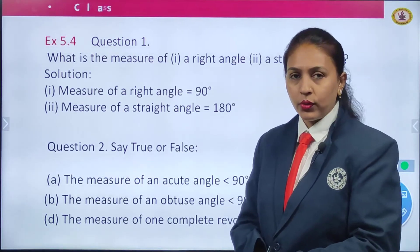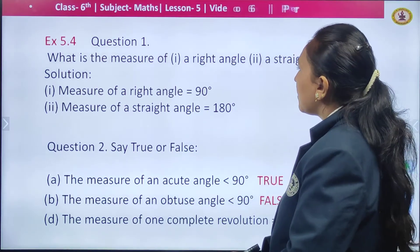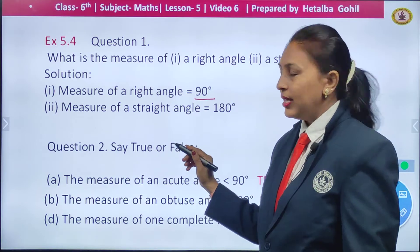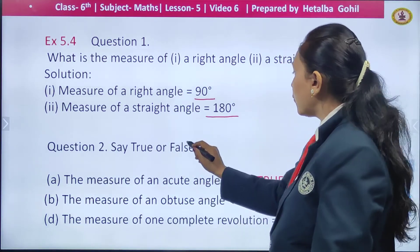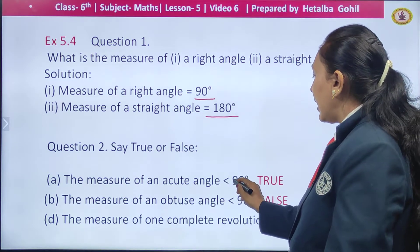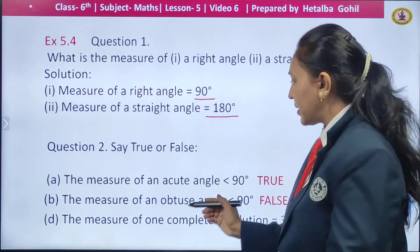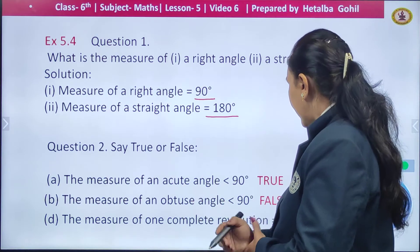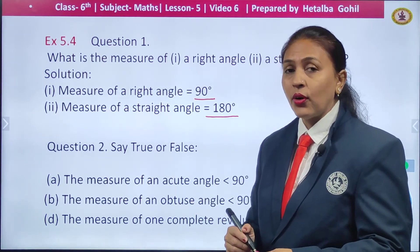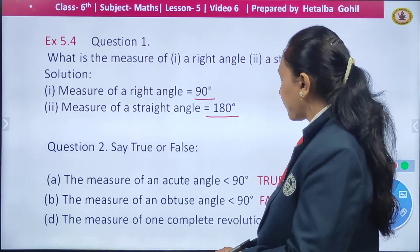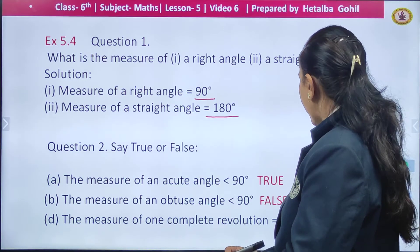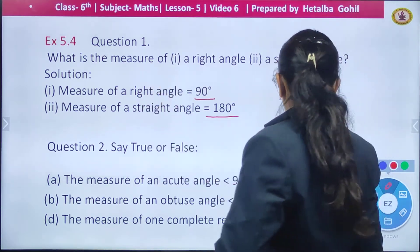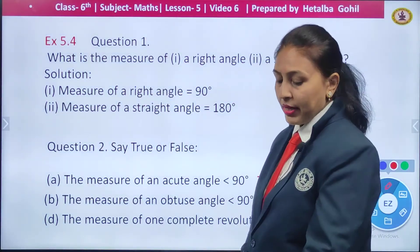Now, exercise 5.4 question number 1: what is the measure of a right angle and a straight angle? The measure of a right angle is 90 degrees and the measure of a straight angle is 180 degrees. True or false: the measure of an acute angle is less than 90 degrees — yes, that is true. The measure of an obtuse angle is greater than 90 degrees — that is true. The measure of one complete revolution is 360 degrees — that statement is also true.